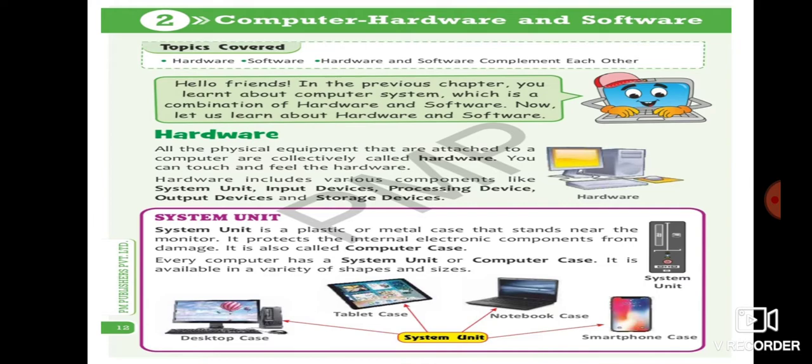So hardware have various components, the first component is system unit. System unit is a plastic or metal case that stands near the monitor. It protects the internal electronic components from damage. It is also called computer case. Every computer has a system unit or computer case. It is available in a variety of shapes and sizes.